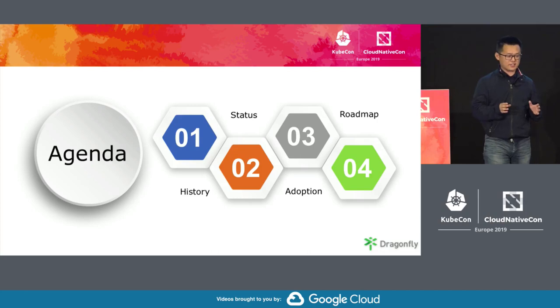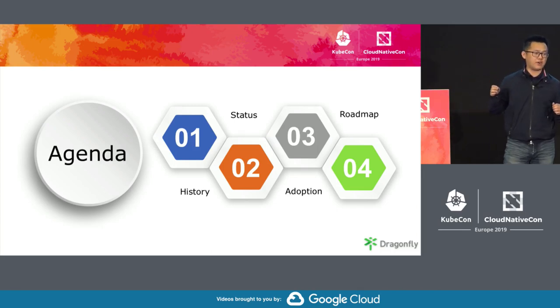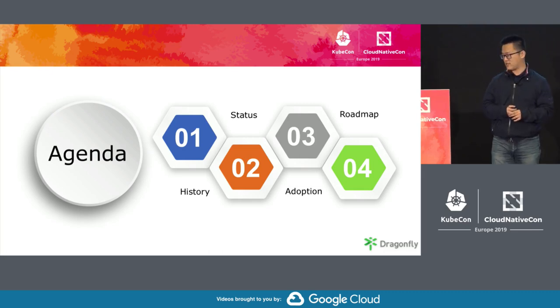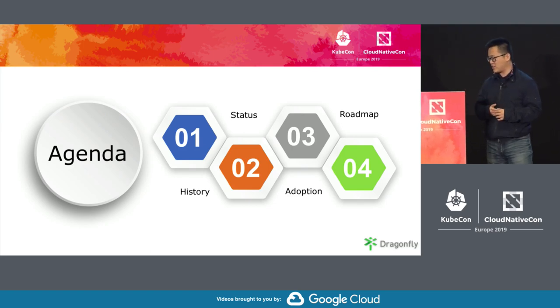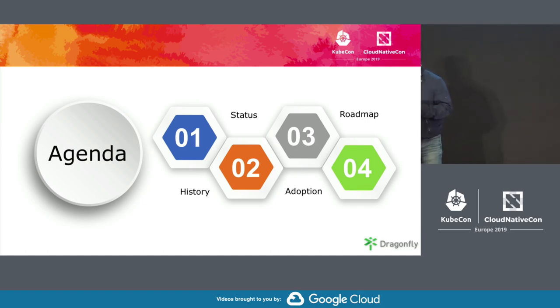At that time, we tried to provide solutions adopting P2P scenarios for image distribution. It is Dragonfly. Here is a brief agenda: first, I will give an introduction about the history — why Dragonfly, what is Dragonfly. Second is about status. Dragonfly is already a sandbox project in CNCF, and we are planning to make it enter incubation level after maybe three months. My colleague will also give a brief introduction about adoption and roadmap.